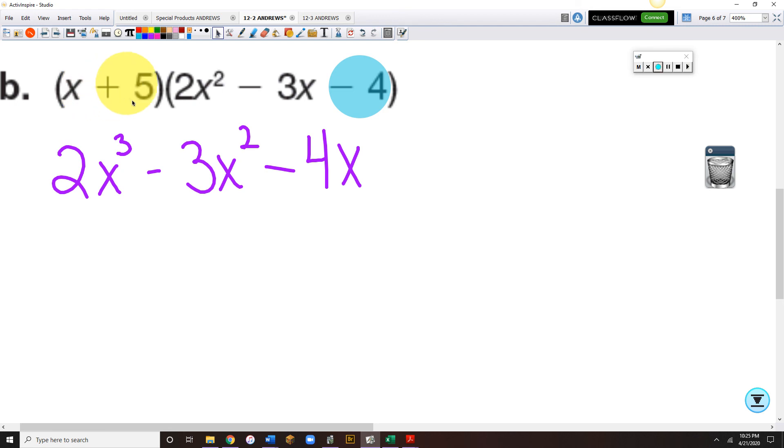Then I'm going to go into the 5 and I'm going to start all over again. 5 times 2x squared. Now, they're both positive, so that makes this a plus 10x squared. A plus 5 times a minus 3 would be a minus 15x.